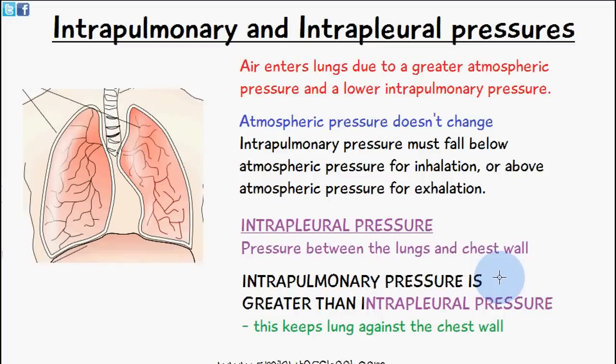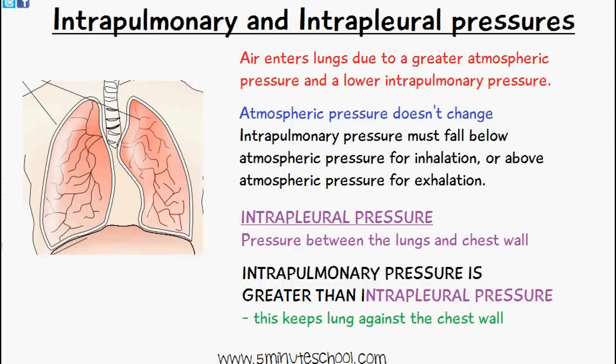Normally, the intrapleural pressure is lower during inspiration because of the expansion of the thoracic cavity than it is during expiration. In the normal method of ventilation, the intrapulmonary pressure — the pressure inside the lungs — is going to be greater than intrapleural pressure, and this helps to keep the lungs against the chest wall.